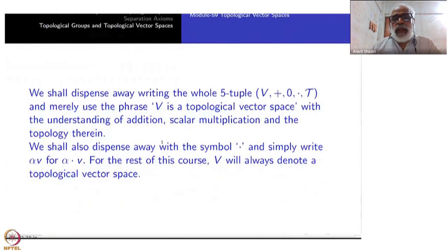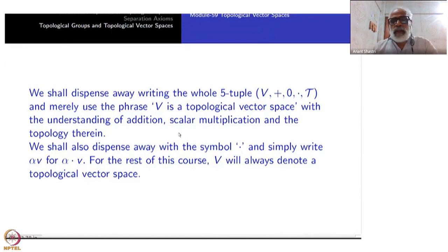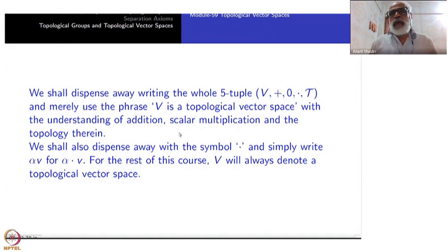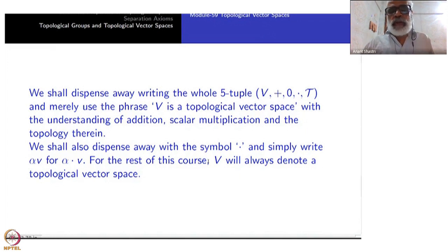We shall dispense with writing the whole quintuple all the time. We merely use the phrase 'V is a topological vector space' with the understanding that addition, scalar multiplication, the topology, and the zero element are all present. We will also dispense with the dot symbol and just write αv. The standard notation is scalars on the left, vector on the right — though αv = vα is also allowed if there is no confusion.